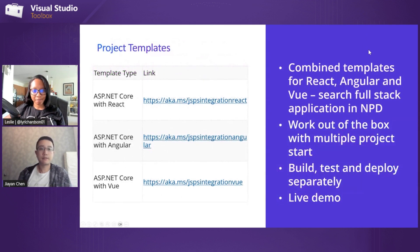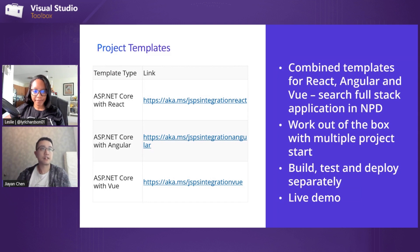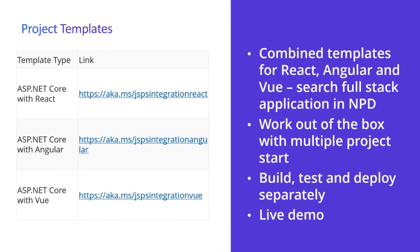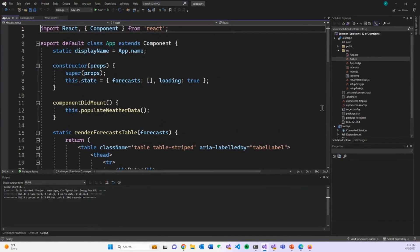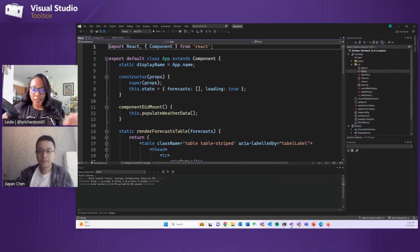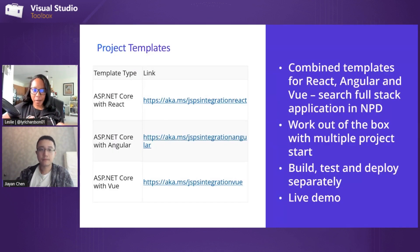Let's move to project templates. Here are the links to the tutorials. We have ASP.NET Core with React, Angular, and Vue — combined templates. You can just search 'full-stack application' in the New Project Dialog. It works out of the box, giving you a multiple project start experience under the same solution. You're able to build, test, and deploy your JavaScript application separately with the .NET ones in your solution.